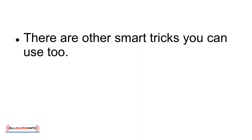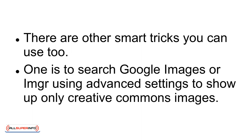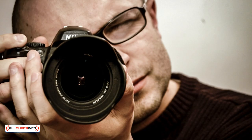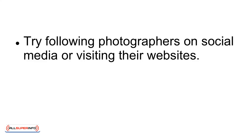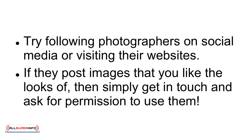Smart tricks. There are other smart tricks you can use, too. One is to search Google Images or Imager using advanced settings to show up only creative commons images. Another useful strategy is to simply try reaching out to creators with images that you want to use. Try following photographers on social media or visiting their websites, and if they post images that you like the looks of, simply get in touch and ask for permission to use them.